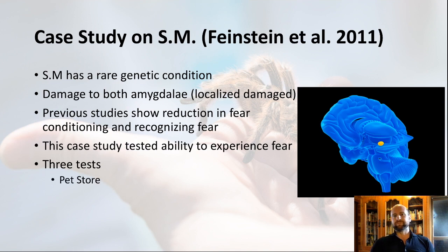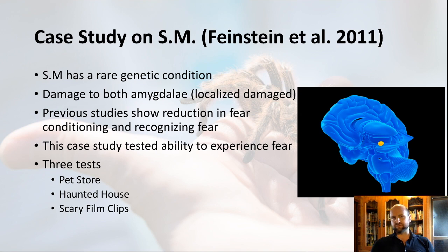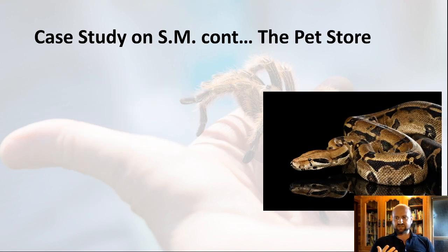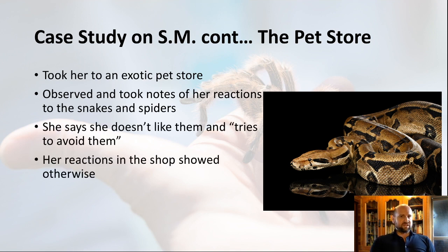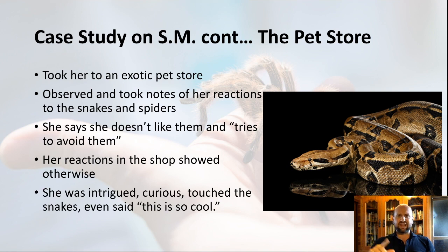A more recent and interesting study involves SM, who has a rare genetic condition causing damage to both her amygdalae — one on each side. This localized deep-brain damage is very rare and makes her a valuable case study. Previous studies showed she had a reduction in fear conditioning, meaning she struggles to learn to be afraid of things, which is dangerous, and also difficulty recognizing fear in others' expressions. The aim of this study was to see if she could experience fear herself.